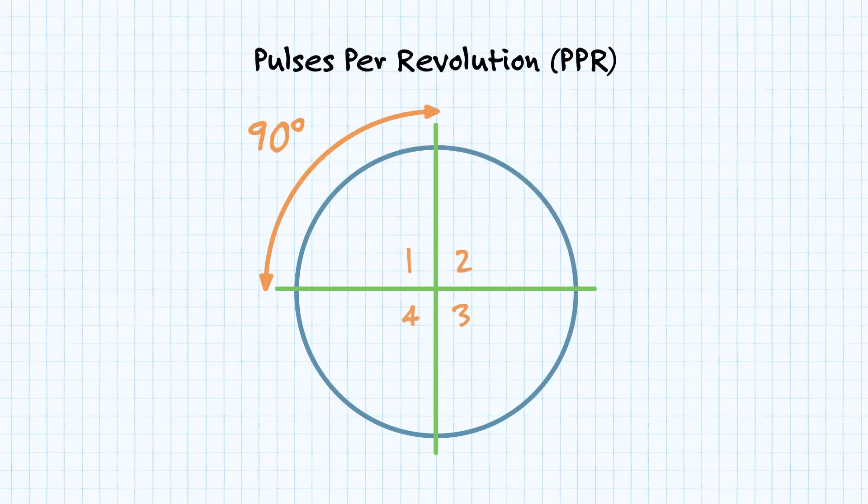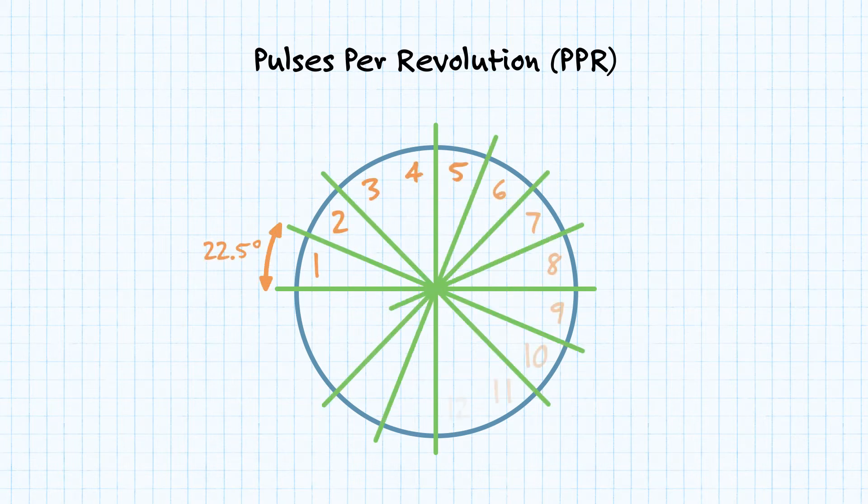For example, pulses per revolution describes the number of high pulses, or periods, an encoder will have on either of its square wave outputs over a single revolution.